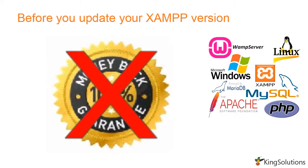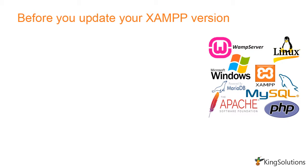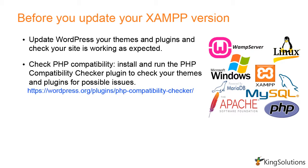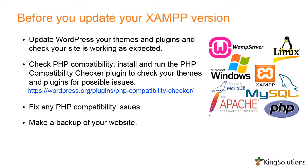For detailed recommendations see the WordPress hosting handbook. Although WordPress works with the latest PHP versions, some of your themes or plugins may not. Here are a few steps to take before proceeding: first, update WordPress, your themes, and plugins and check your site is working as expected; second, install and run the PHP compatibility checker plugin to check for possible issues; third, fix any PHP compatibility issues; fourth, make a backup of your websites; fifth, make a backup of your XAMPP installation.